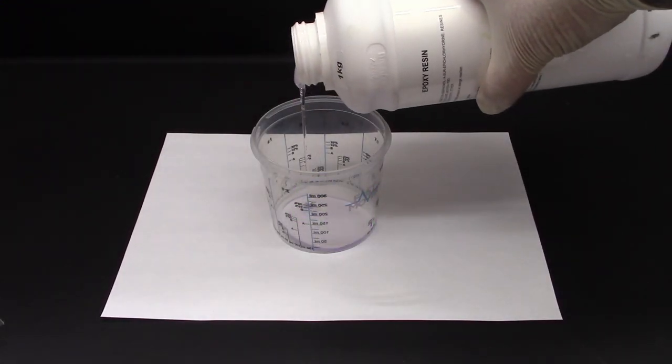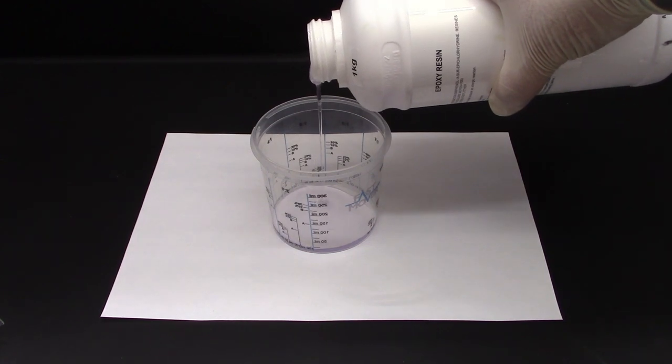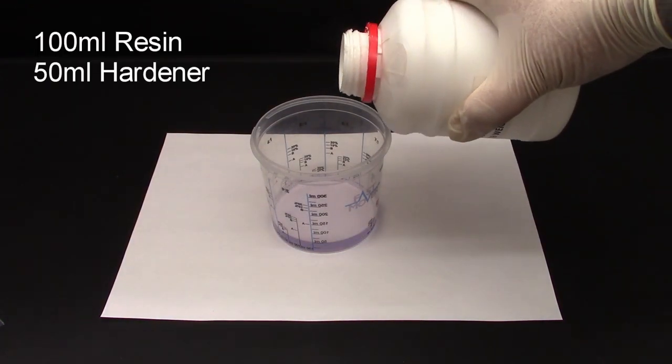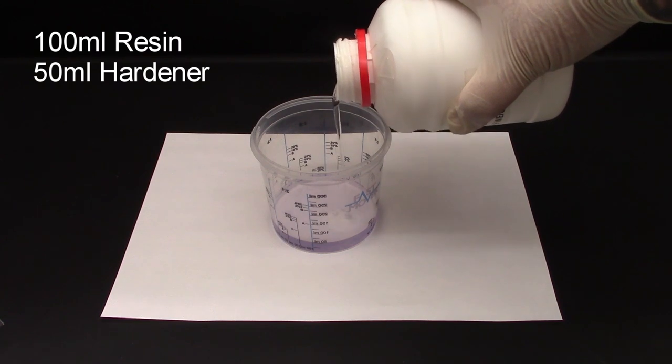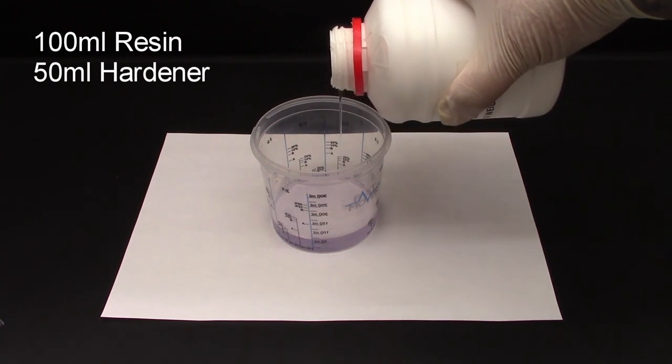First, we measured out our required amount of clear epoxy resin and hardener. We're using 100ml of ACF clear epoxy art resin with 50ml of slow cure hardener.